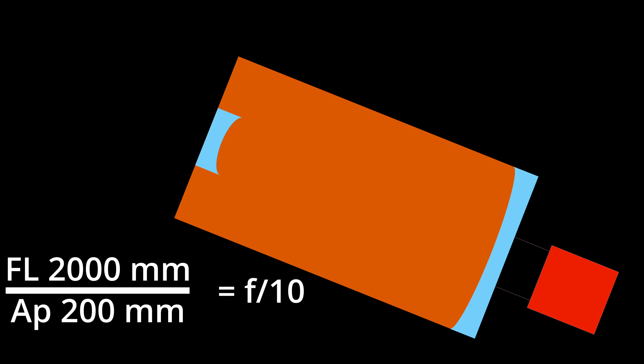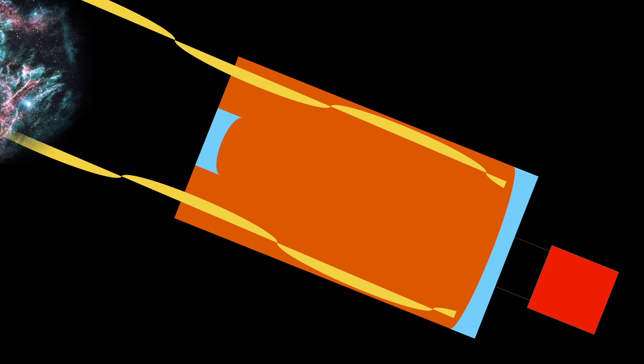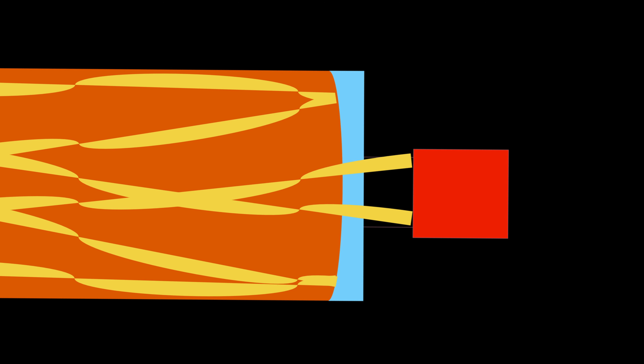If we apply the typical interpretation of f-ratio, this telescope is pretty slow — it doesn't transmit light very well and will need a long time to create an exposure. But let's see what actually happens to the light it gathers. Pointing the imaginary telescope at a deep sky object, light travels from the DSO through the corrector plate, bounces off the primary mirror, curves back toward the secondary mirror, and then crosses over itself as it heads toward the sensor at the back of the telescope. Notice that the light does not fall straight down onto the sensor — rather, it is spread out over the sensor.